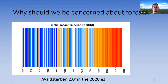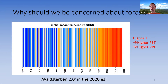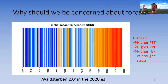Climate change is exemplified by a bar chart of global mean temperatures from the Climatic Research Unit dataset, showing most of the warmest years have occurred in the past 30 years. Higher temperatures result in higher potential evapotranspiration and a higher vapor pressure deficit of the atmosphere, both leading to higher water consumption by plants during photosynthesis, and eventually a higher risk of drought stress.